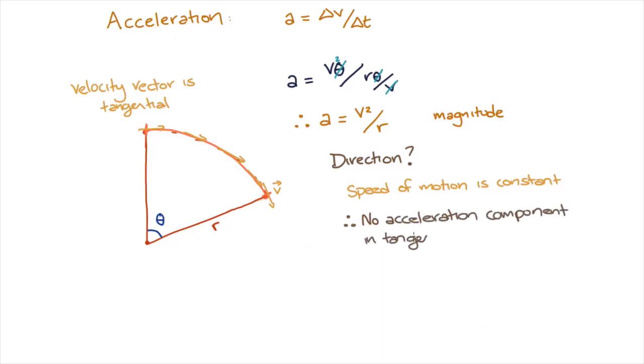We know from our previous velocity derivation that the velocity always points tangentially to the circle. This must mean that all of the acceleration must be perpendicular to the tangent, which is in the radial direction.